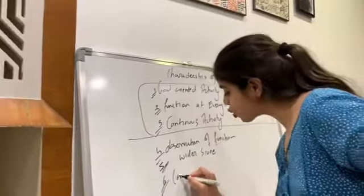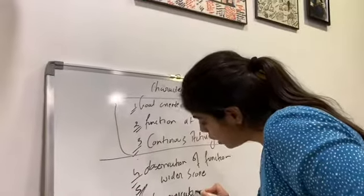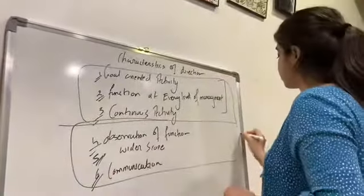So the sixth characteristic is communication. The seventh is motivation. It is necessary to motivate the employee in order to get the best effort from them. You should keep your employee so motivated that you get maximum and good work from them. If the employee is demotivated, they won't be able to work well. So provide such motivation to employees that you can get the best work from them.